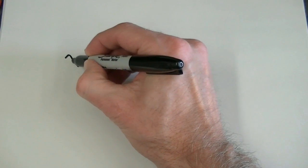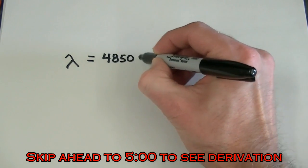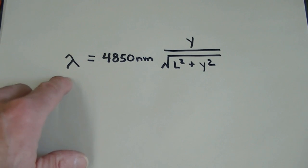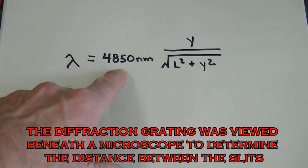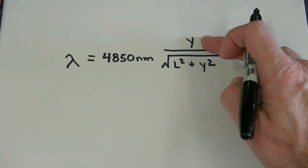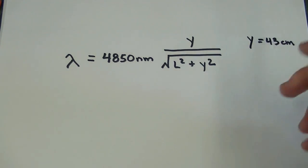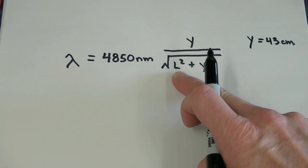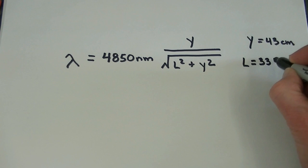We'll now go ahead and use this equation to find the wavelength of light that we measured in the experiment. If you'd like to see a derivation for this equation you can just skip ahead in the video. In this equation, lambda represents the wavelength of light that we're trying to find. 4,850 nanometers represents the distance between the slits in the diffraction grating. Y represents the distance between the light source and its next nearest neighbor — we measured that to be 43 centimeters. And L is the distance between the light source and the diffraction grating, which we measured to be 3.3 meters, or 330 centimeters.